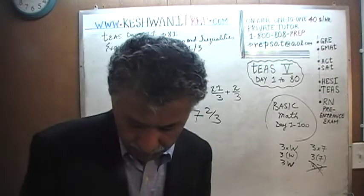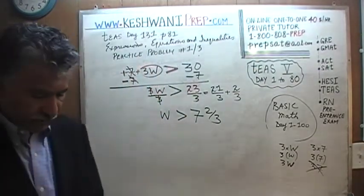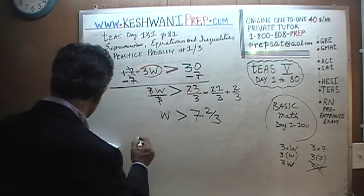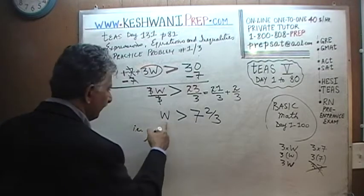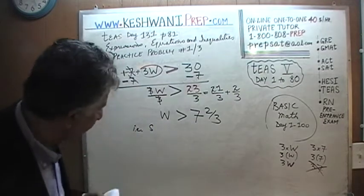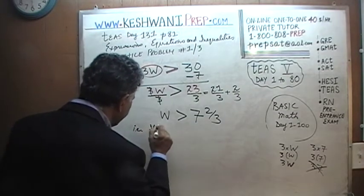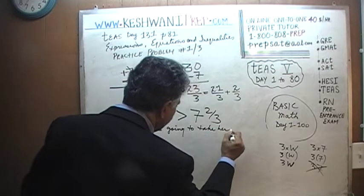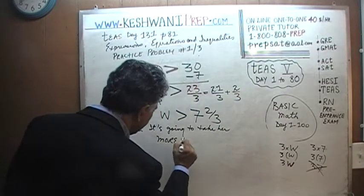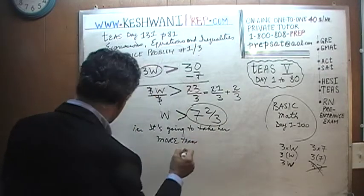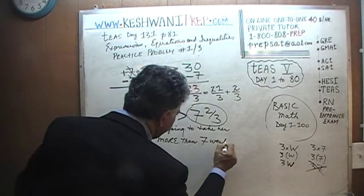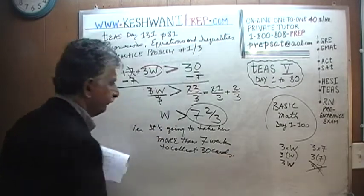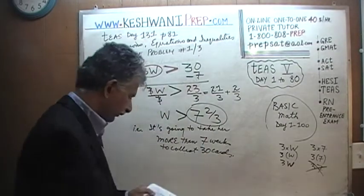Obviously we can't go by 2-thirds of a week — it has to be a whole week. So the conclusion is that it's going to take her more than 7 weeks to collect 30 cards. What this tells us is that it's going to take her more than 7 weeks to collect 30 cards.